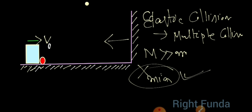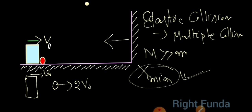In an elastic collision where a very heavy body strikes a small ball, the small ball starts moving with a velocity of 2V₀, while the block's velocity remains nearly unchanged. In a single collision the change is negligible, but over multiple collisions the block's velocity keeps decreasing.